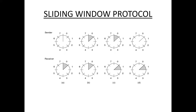As we discuss sliding window protocols. In stop-and-wait protocol, only one frame can be transmitted at a time. This results in serious inefficiencies when the bit length is increased. So to increase efficiency, we must try to transmit more than one frame at a time.